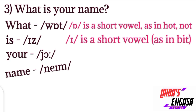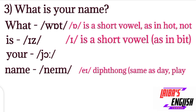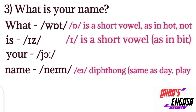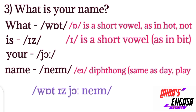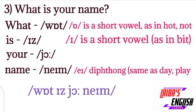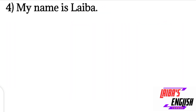The next word is 'your,' represented by the 'j' sound like in 'yes' and an 'oh' sound. In 'name': N sound at the start, then the 'ey' diphthong sound like in 'day,' 'play,' and ending with M sound. What is your name? The answer is: my name is Laiba.